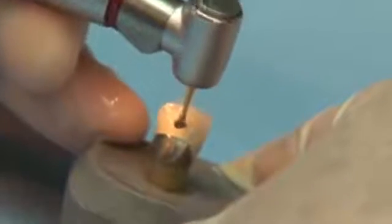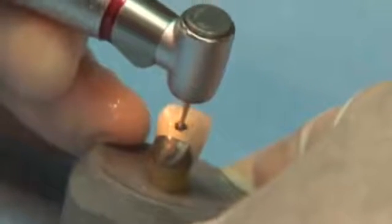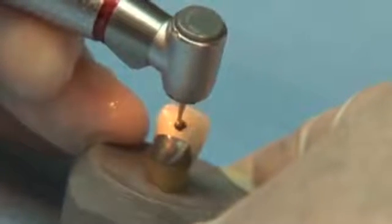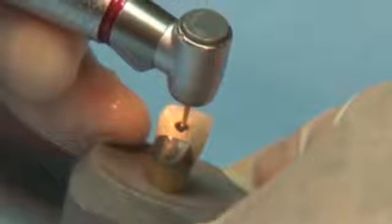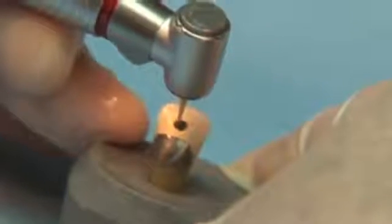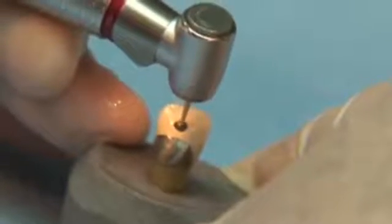Clinicians no longer have to worry about how thick the metal coping is because the Great Whites will cut through any metal at any thickness. After the initial access through the restoration or tooth is created...